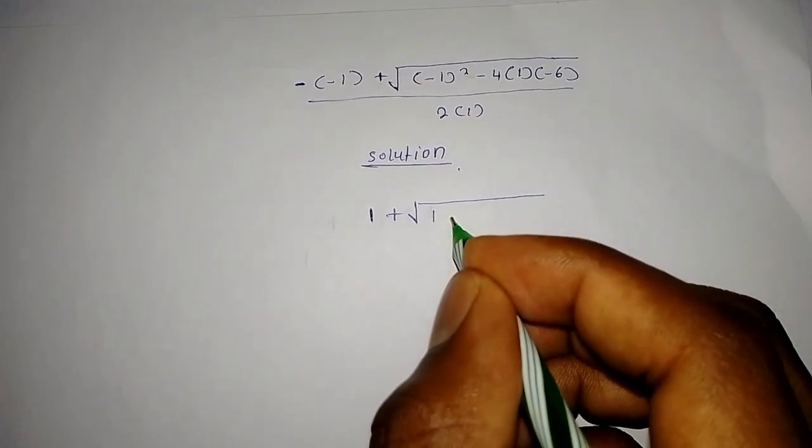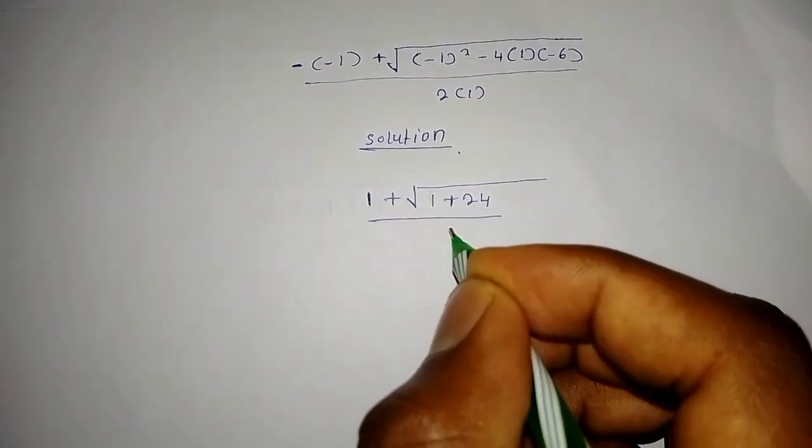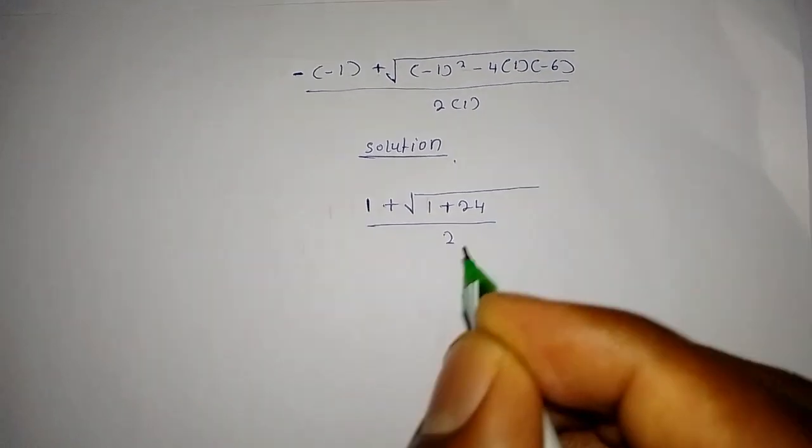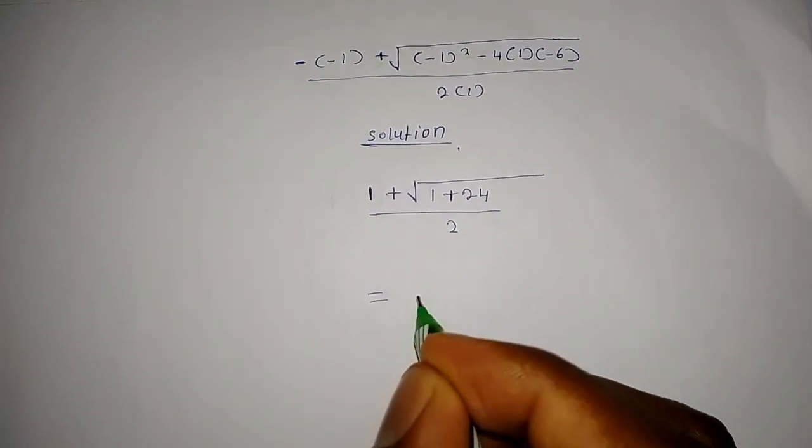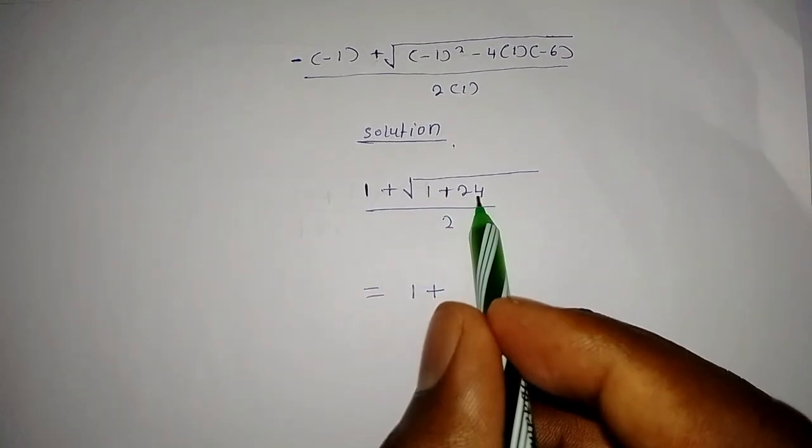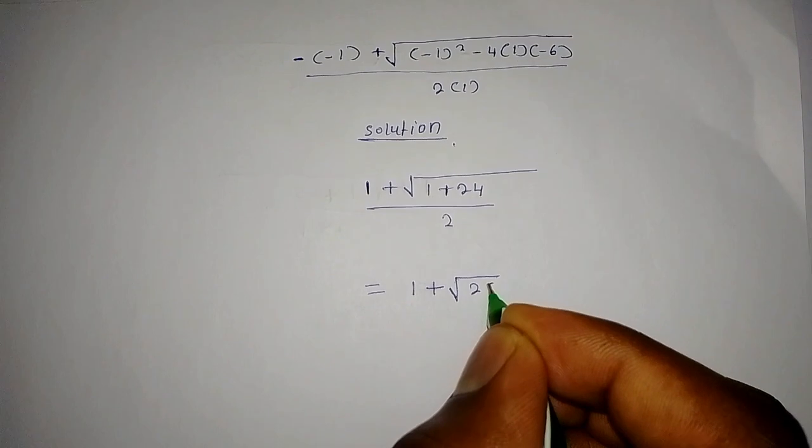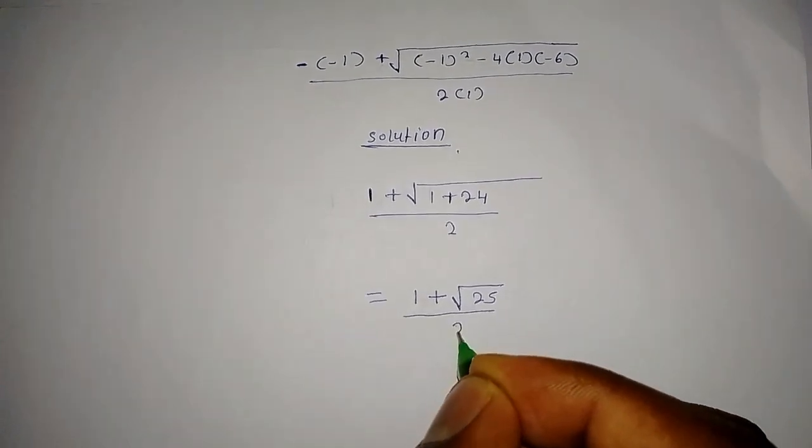Divided by 2 multiply by 1, that is 2. Then that becomes 1 plus 1 plus 24, you get 25. That becomes the square root of 25 divided by 2.